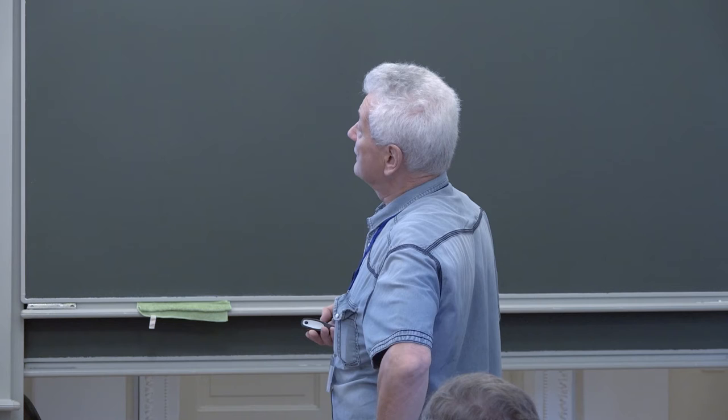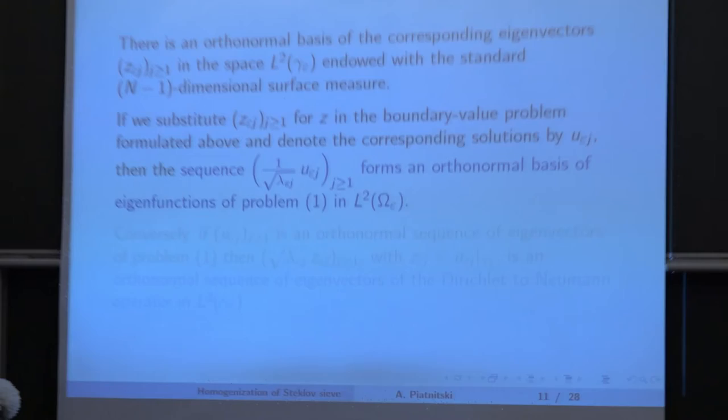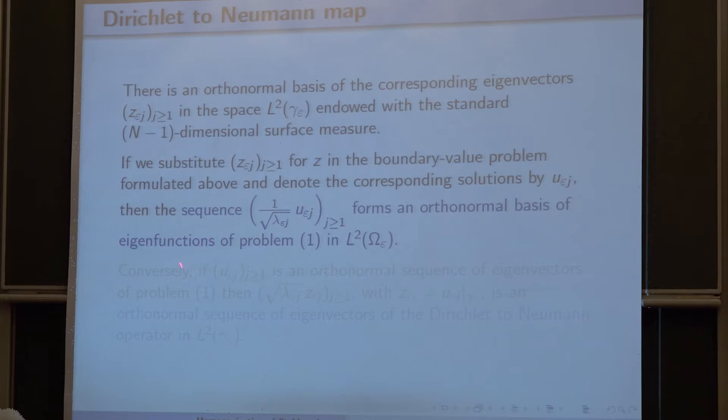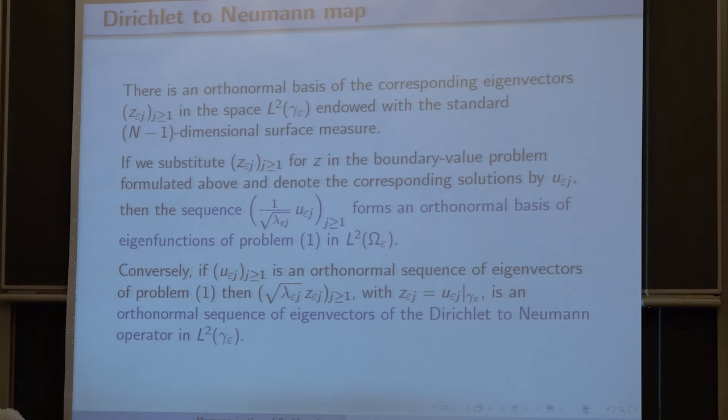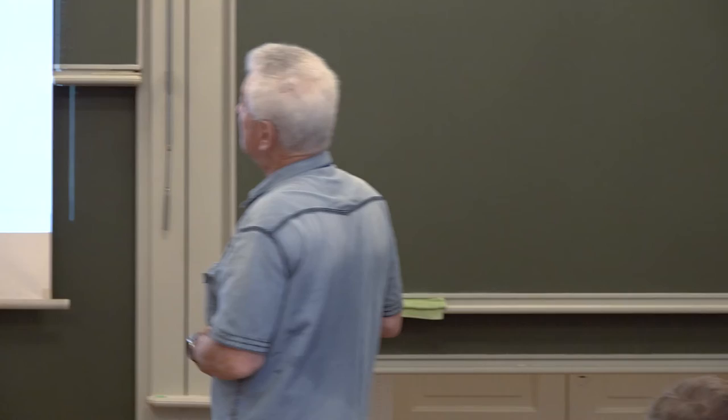It is also well known that the eigenfunctions normalized in a certain way form an orthonormal basis not only on the surface but also in L2 of the whole domain. Conversely, if we have eigenvalues in the whole domain, the traces under the opposite normalization form an orthonormal basis on the surface.